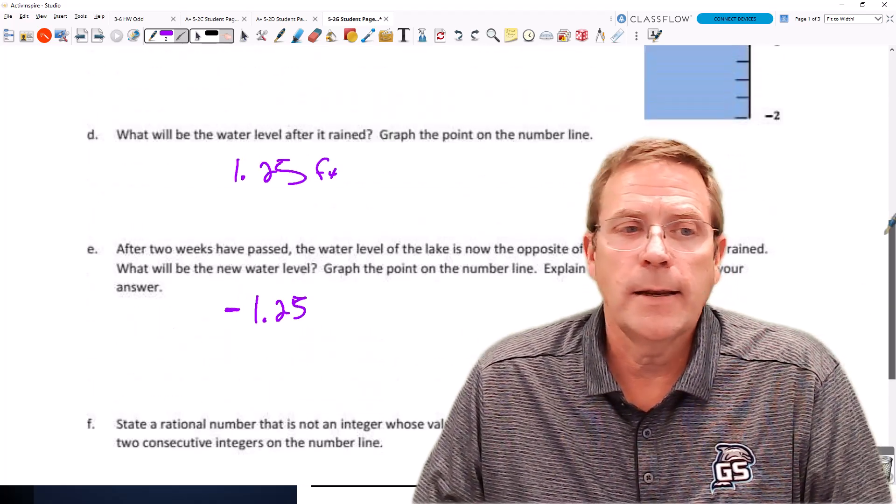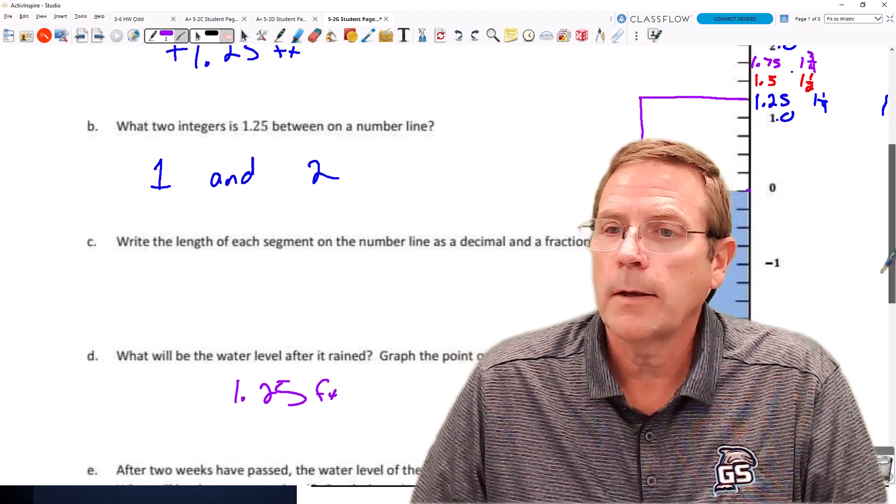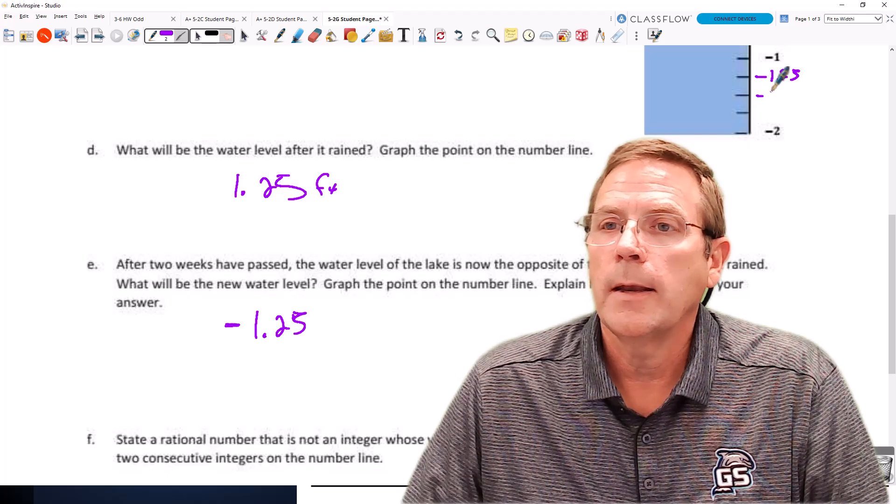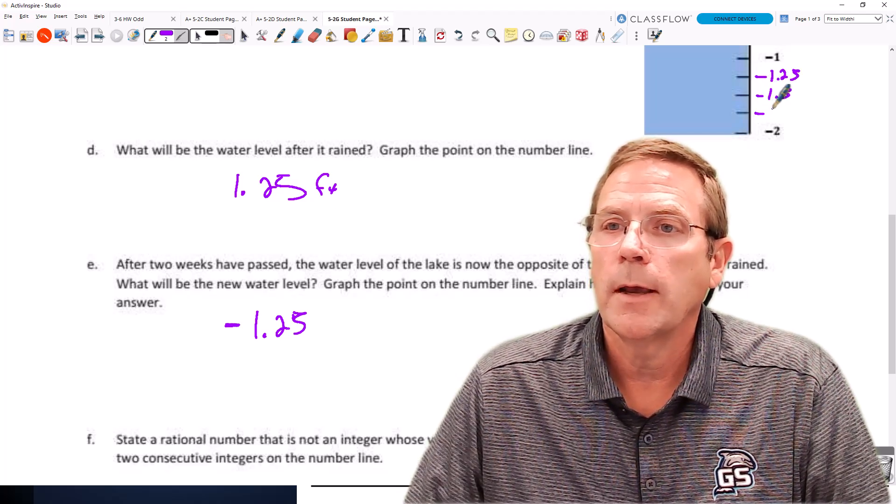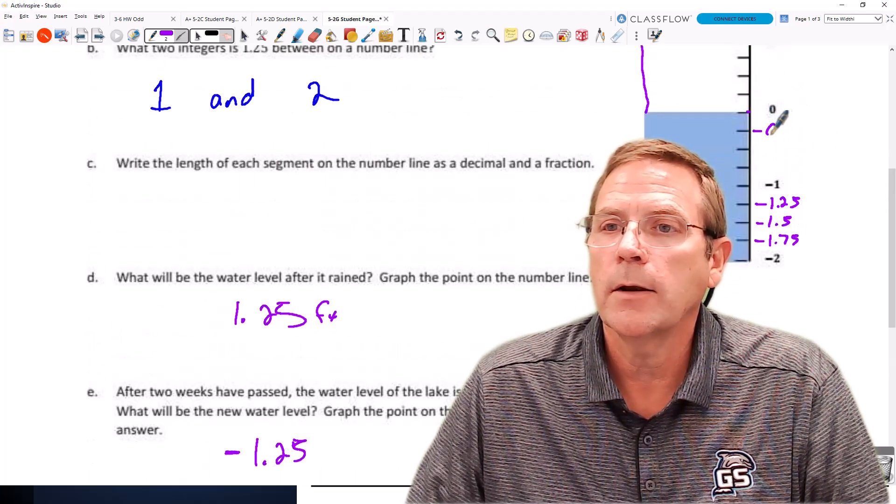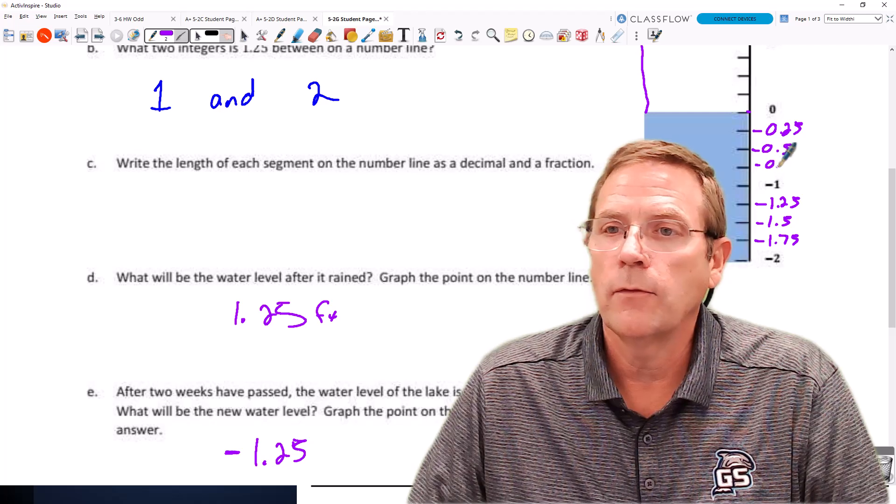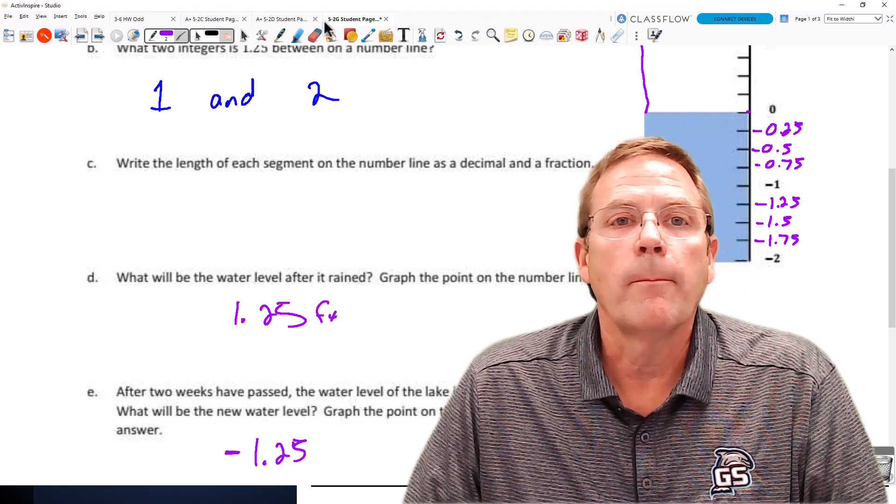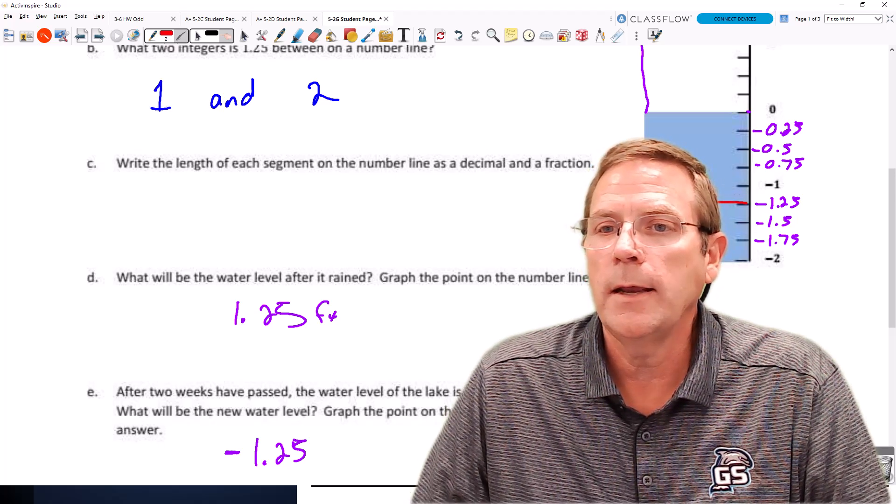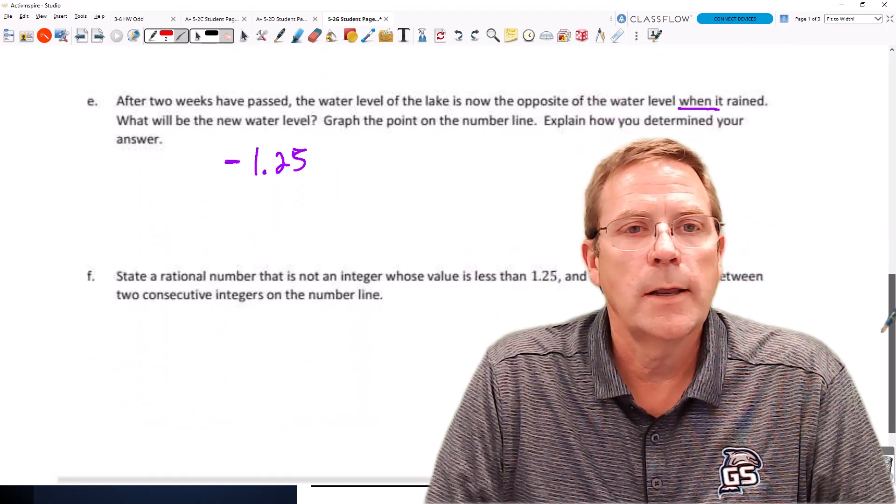We're going to graph that and explain how we determined our answer. We need to start off down here by taking and labeling these parts. So that's negative 1.25, this will be negative 1.5, and this will be negative 1.75. And if we were to fill in the other blanks in between here, that would be negative 0.25, negative 0.5, and negative 0.75. So when we plot this new point on the number line, it's going to take place right here at negative 1.25.